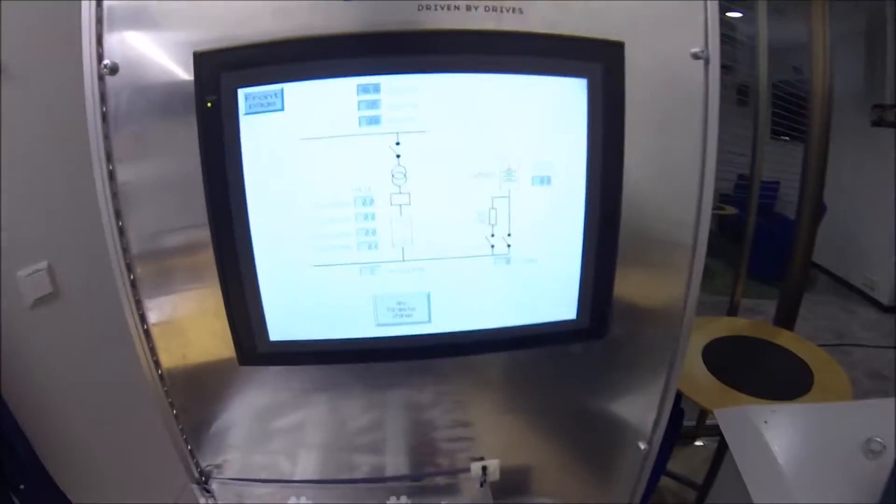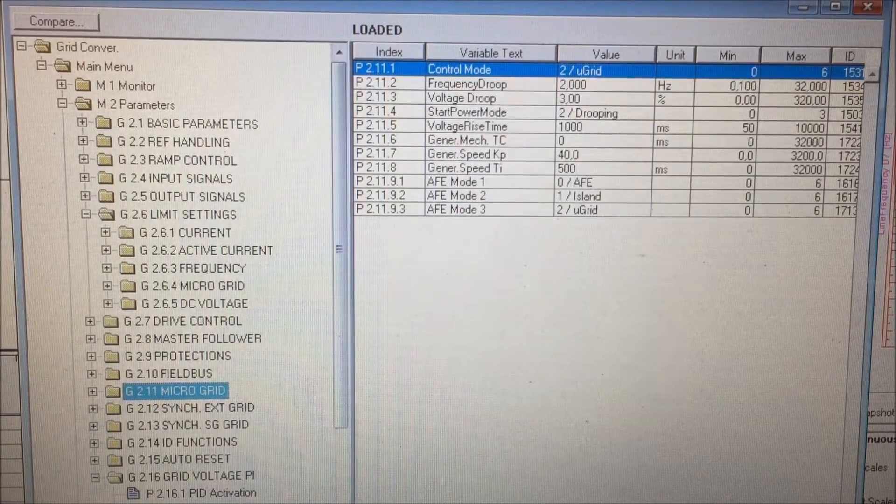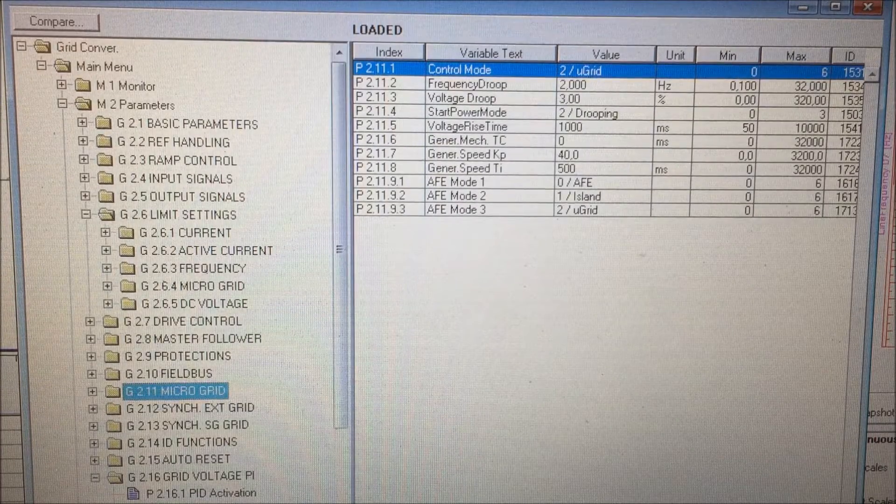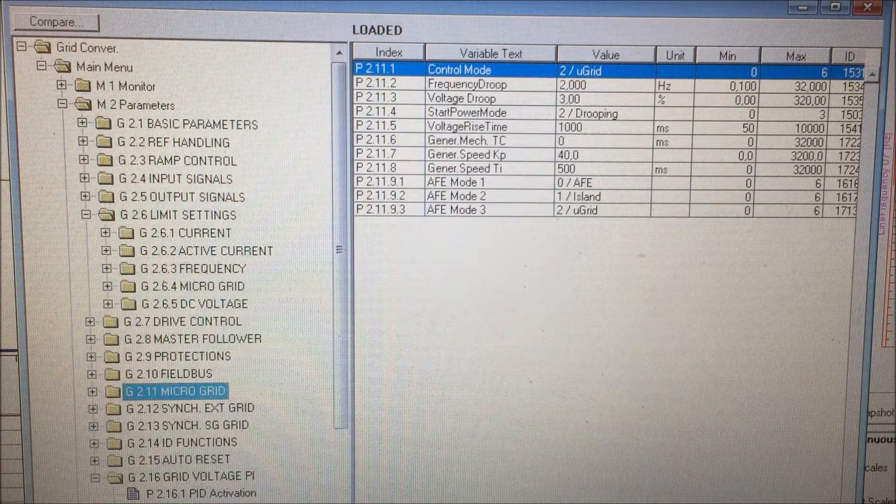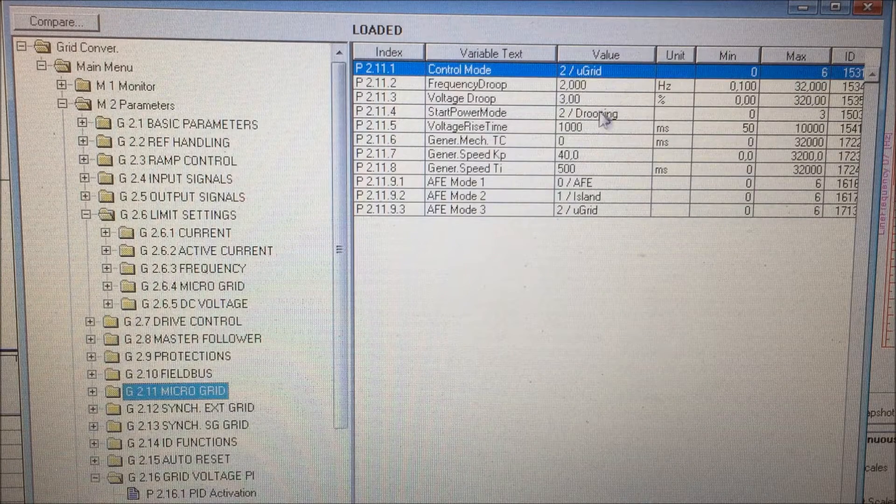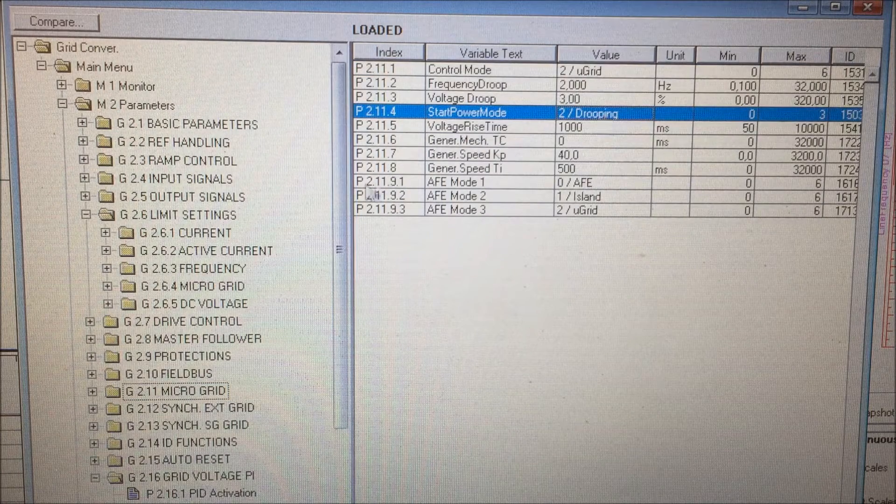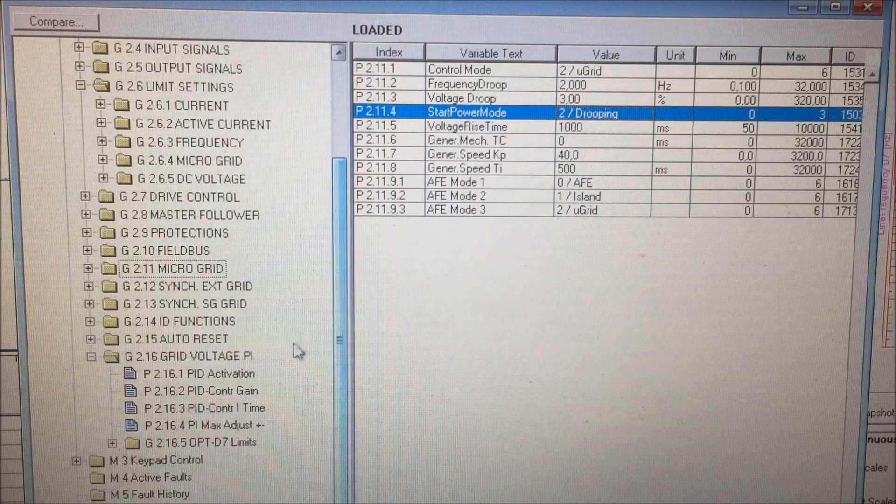Now we are going to connect the drive to the grid, to the city grid. Commissioning and starting up the frequency converter towards the grid for the first time could be useful to start up in U-grid without drooping and select the drooping not isosynchronous. Also turn off the PID regulator.